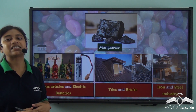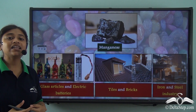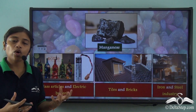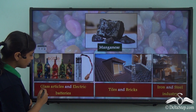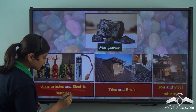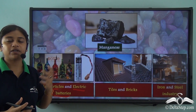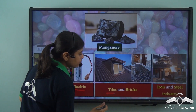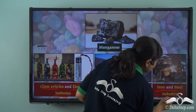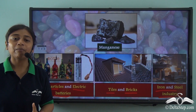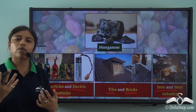Now let us come to another important metallic mineral — the last one we will learn about — and that is manganese. Manganese is widely used in glass articles, such as decorative glass used as showpieces in homes, restaurants or cafes. It is also widely used in electric batteries because of its magnetic properties, and it is commonly used to make roof tiles and floor bricks. It is further used in the iron and steel industry.